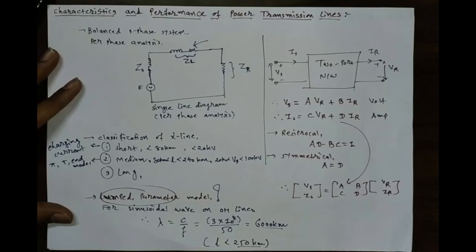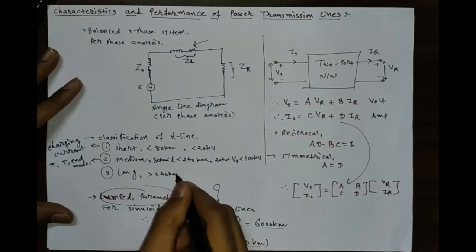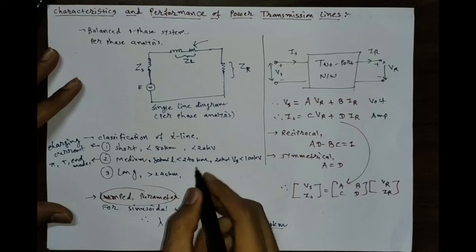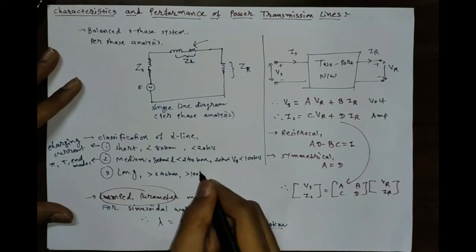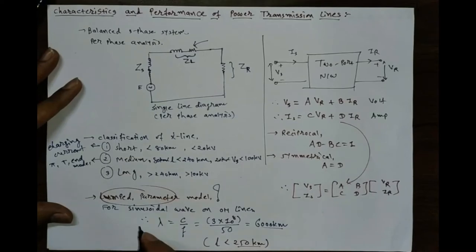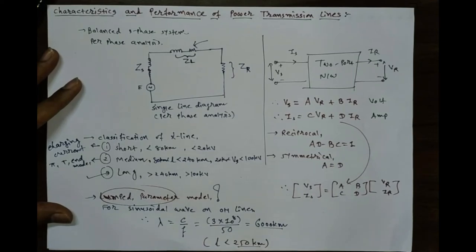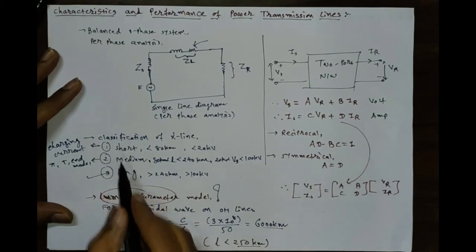For a long transmission line, the length is greater than 240 km and the transmission line voltage is more than 100 kV. In that case we consider that your transmission line parameters are distributed — unlike the lumped parameter approach used for short and medium lines.